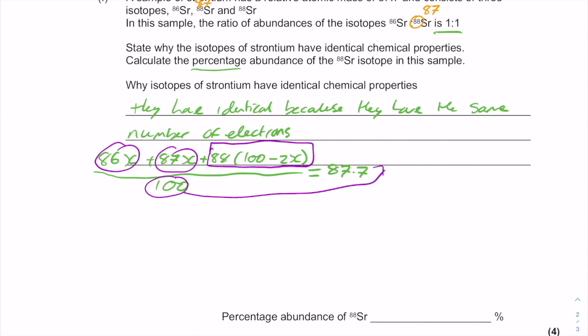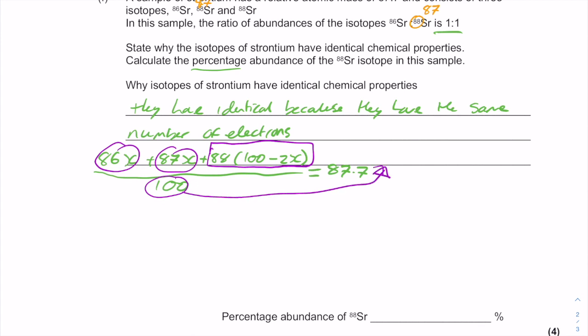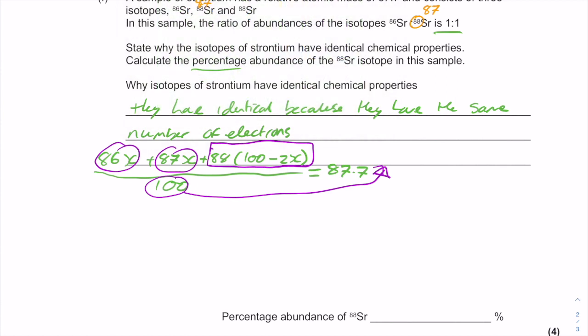And then I'll also take the 100 from down here and I'll multiply it by the 87.7 here. So on the next line, I'll end up with 86x plus 87x gives me 173x, and if I take the brackets I'll do 88 times 100, which will give me 8800. And then I'll do 88 minus 2x, which will give me minus 176x, and I will make that equal the 87.7, which I've multiplied by 100 to get 8770.